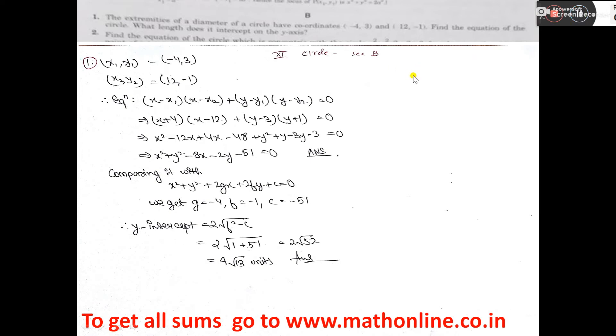Okay, now see, we want to do number one sum. The extremities of a diameter of a circle have coordinates. So we can draw a circle here and the extremities of a diameter are given: (-4, 3) and (12, -1). Find the equation of the circle.